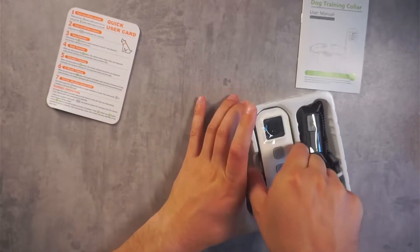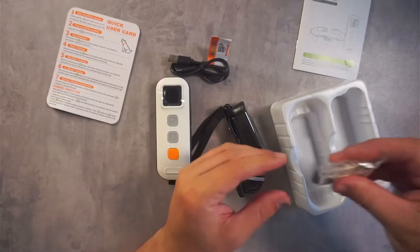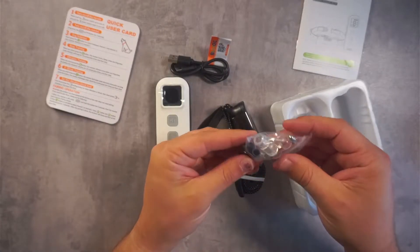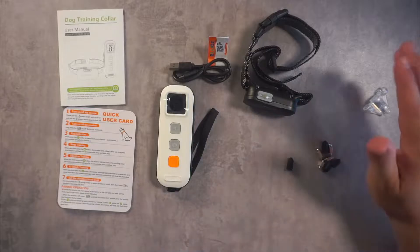Then you have your remote here, you have your collar, and then you have your charger, and then you have your prongs. All right, so let's just go over some basic functions.